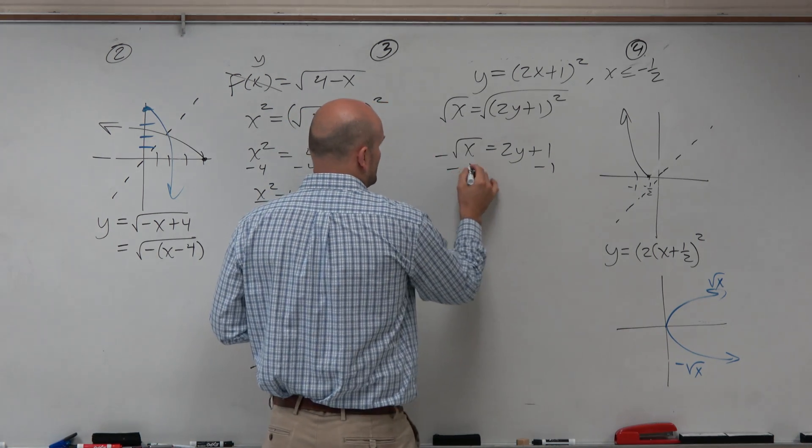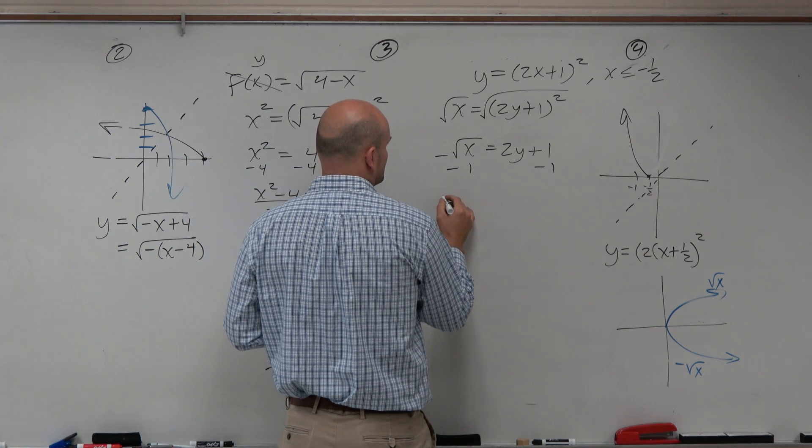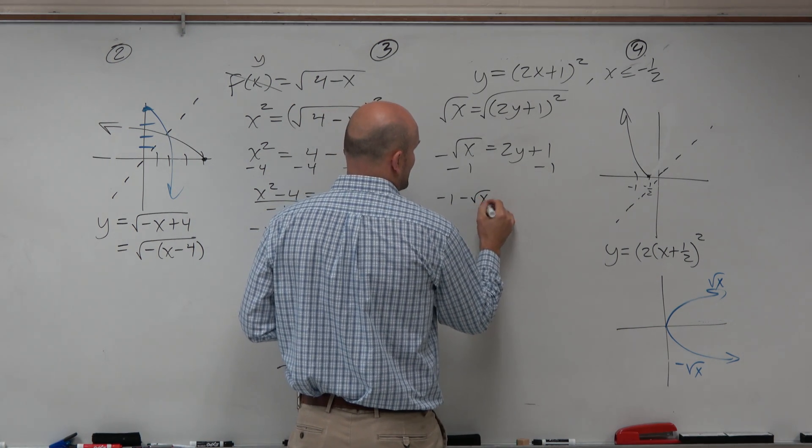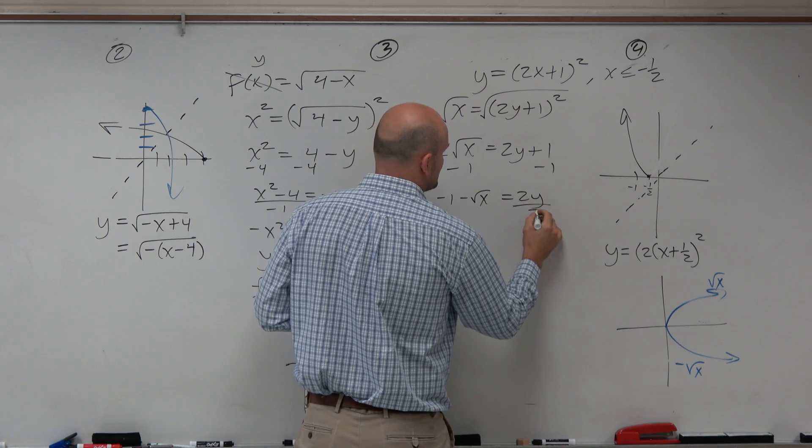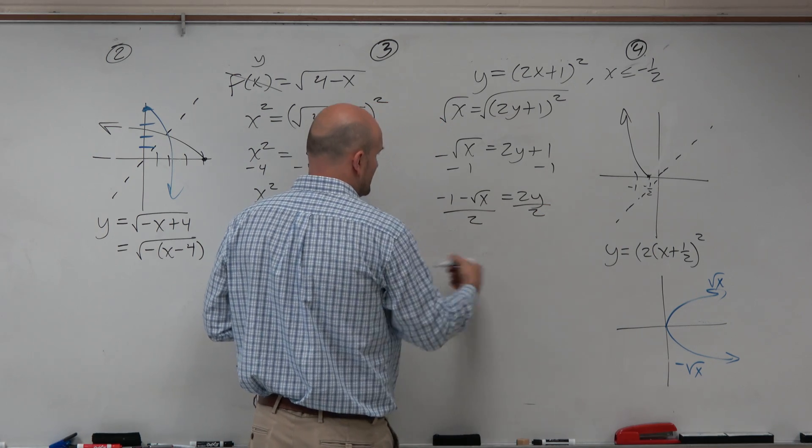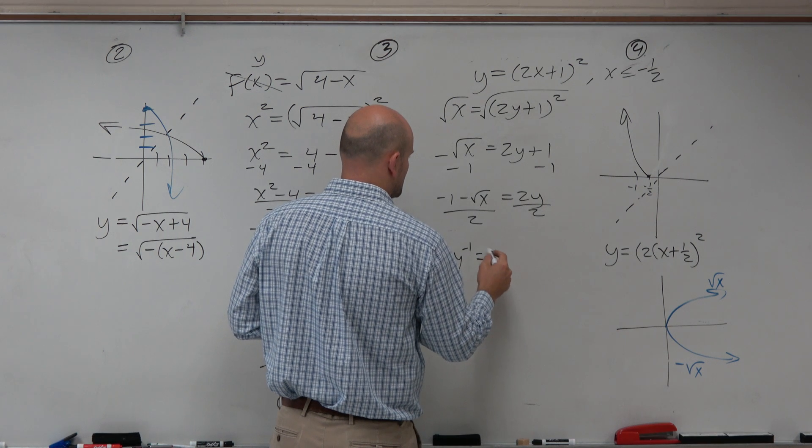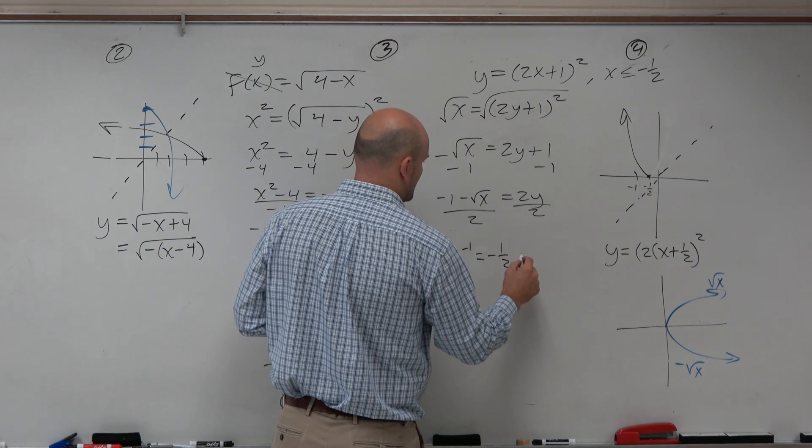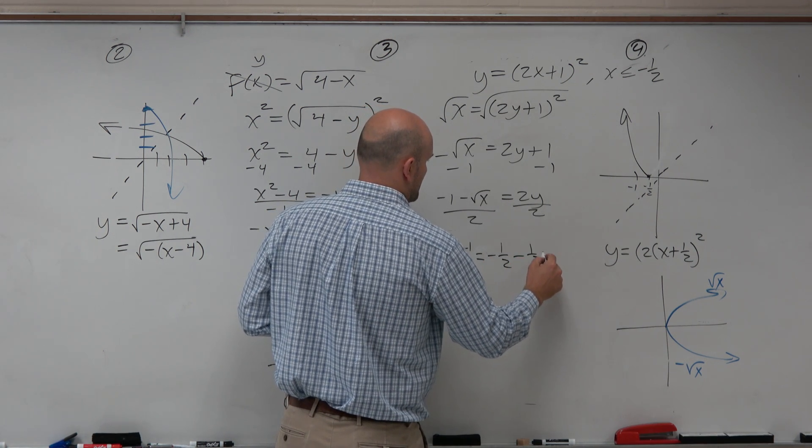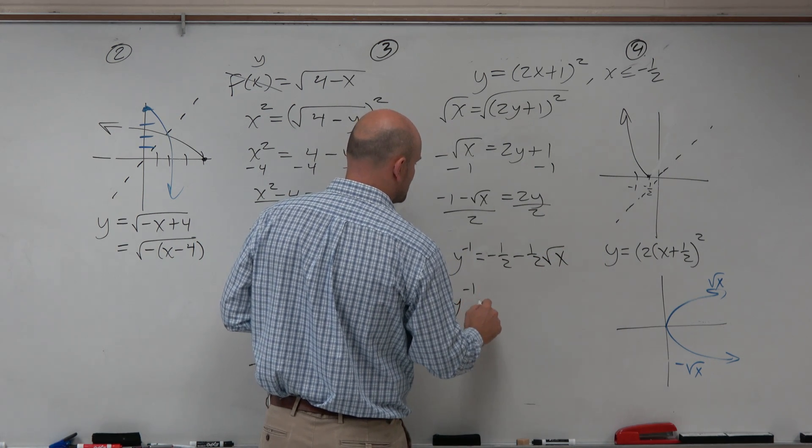And now I can just subtract a 1. So I'll just have negative 1 minus the square root of x equals 2y, divide by 2, divide by 2. And you can distribute that or leave it there, however you want to.